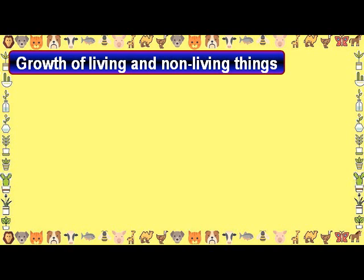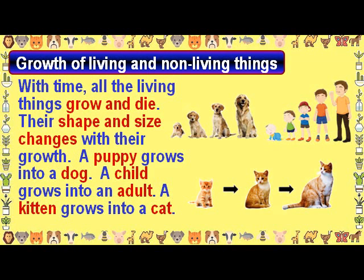Growth of living and non-living things. With time, all living things grow and die. Their shape and size changes with their growth. A puppy grows into a dog, a child grows into an adult, and a kitten grows into a cat.